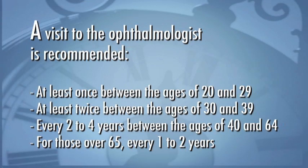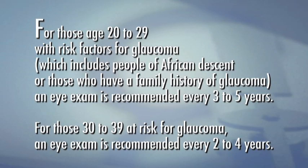For adults, a visit to the ophthalmologist is recommended at the following intervals: at least once between the ages of twenty and twenty-nine; at least twice between the ages of thirty and thirty-nine; every two to four years between the ages of forty and sixty-four; and for those over sixty-five, every one to two years. For those aged twenty to twenty-nine with risk factors for glaucoma — which includes people of African descent or those who have a family history of glaucoma — an eye exam is recommended every three to five years. For those thirty to thirty-nine at risk for glaucoma, an eye exam is recommended every two to four years.